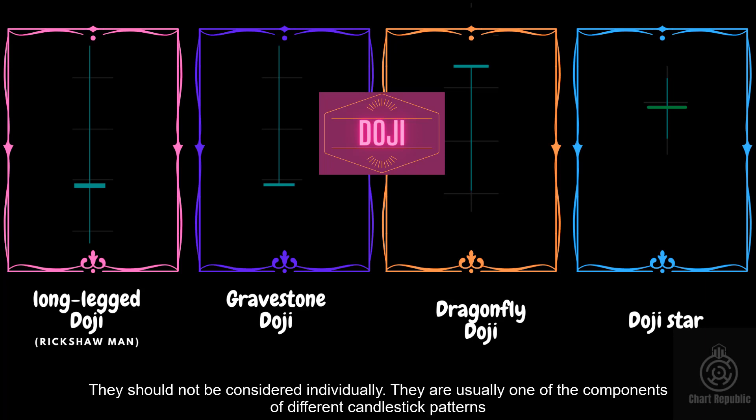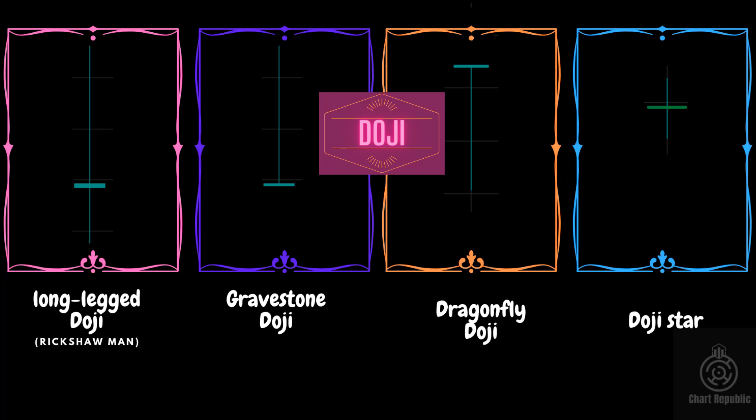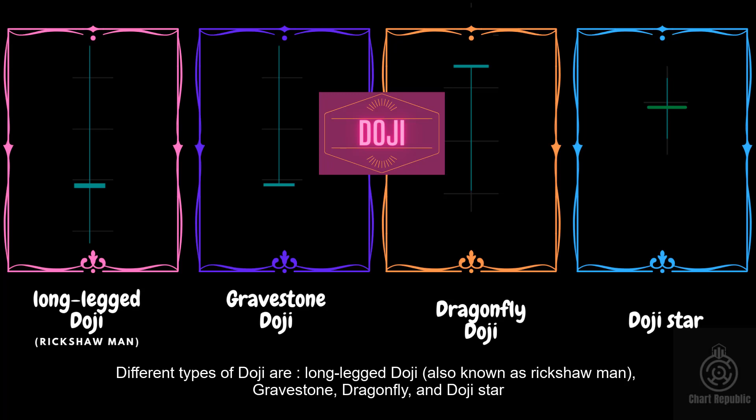Dojis should not be considered individually — they are usually one of the components of different candlestick patterns. Different types of doji are long-legged doji, also known as rickshaw man, gravestone, dragonfly, and doji star.